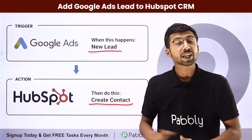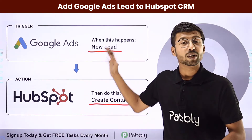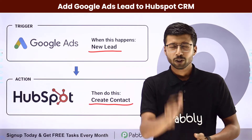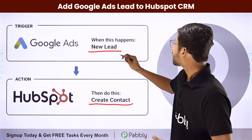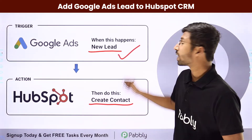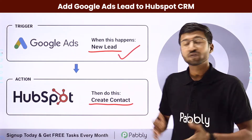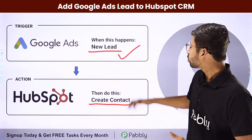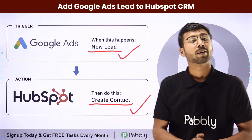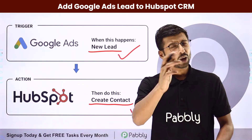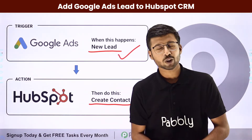You can completely automate this process. The trigger of this automation will be getting a new lead in a Google Ads campaign, and the action will be adding those same leads as new contacts in HubSpot. Now let's see how you can set up this automation.